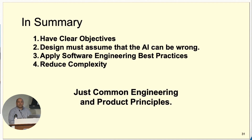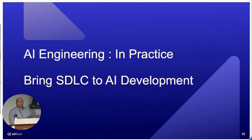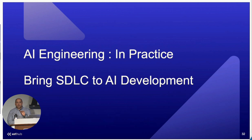In summary, we have four principles for thinking about AI as an engineering discipline: clear objectives; your design must include understanding what happens when the AI can be wrong; you're still doing software engineering; and you have to reduce complexity. If you look at these four, there's not a lot in them that's specifically about AI — they're really just the same common engineering and product principles. AI as an engineering discipline is very much bringing software engineering practices into your AI workflow.